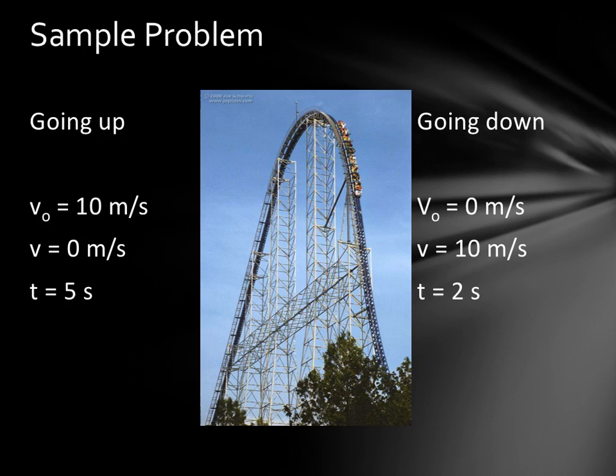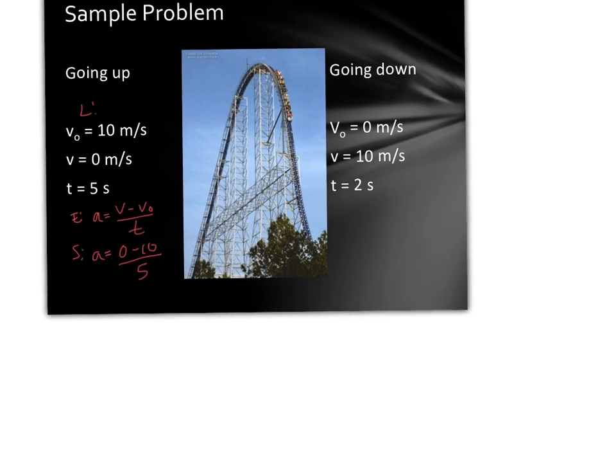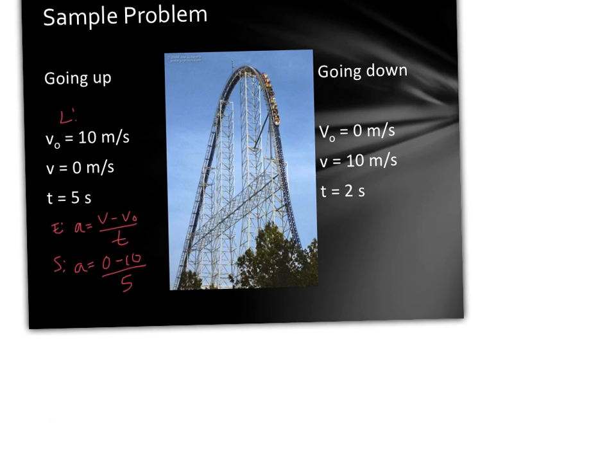So let's talk about this. Here we have a very simple basic sample problem. On one side, we are going up the roller coaster, and the other side we are coming down. These are set up, we already have our L written out, so our equation is going to be a equals v minus v₀ over t. Our substitute is going to be a equals 0 minus 10 over 5, which would end up being negative 10 over 5. So as we solve and get this down to a single number, a is going to be equal to negative 2, and our units are going to be meters per second per second or meters per second squared.